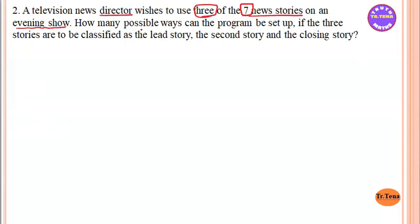How many possible ways can a program be set up through season 30? In the season, the three stories are to be classified: the lead story, the second story, and the closing story.